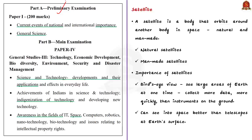So firstly, what is a satellite? A satellite is a body which orbits around another body in space. There are two types of satellites: natural and man-made. Examples of natural satellites include Earth and Moon. We know that Earth rotates around the Sun, so Earth is a satellite of the Sun. Similarly, Moon rotates around the Earth, so Moon is a satellite of Earth.